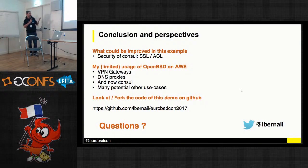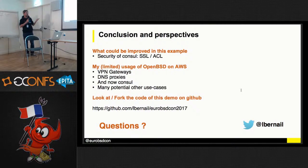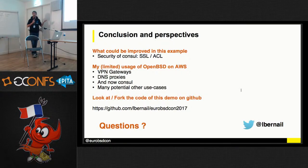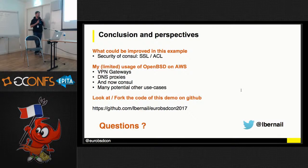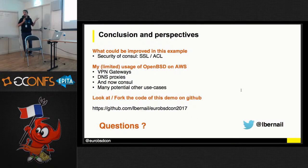My use of OpenBSD is very recent, but I've used it in several use cases: VPN gateways as I just showed you, DNS proxies or DNS resolvers, and now Consul. There are many more use cases. It's interesting to see OpenBSD used for microservices kind of workloads — we can see that it can be used for these things today. All the code for the demo is available on GitHub. If you have questions afterwards, you can ping me on Twitter.